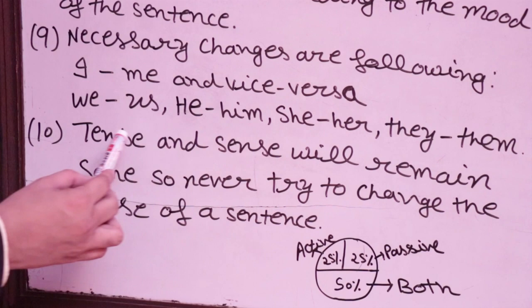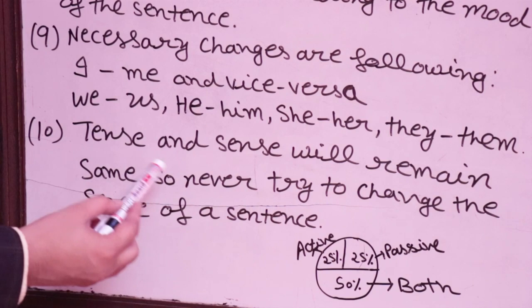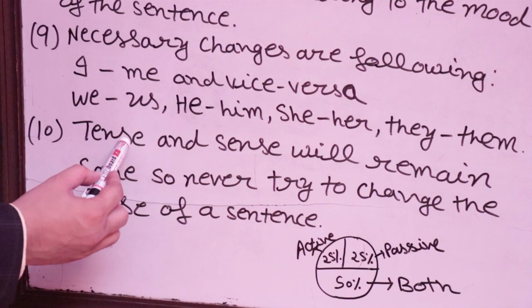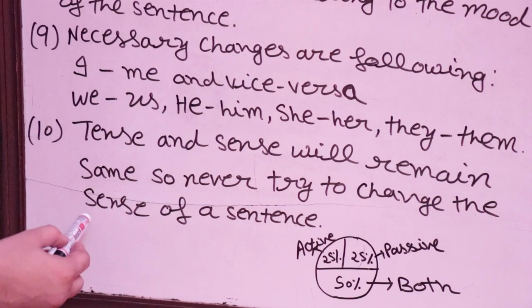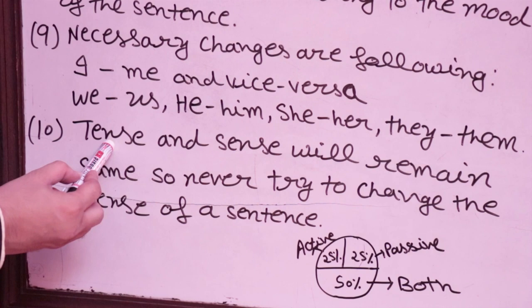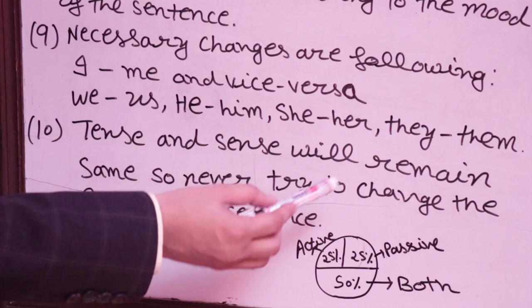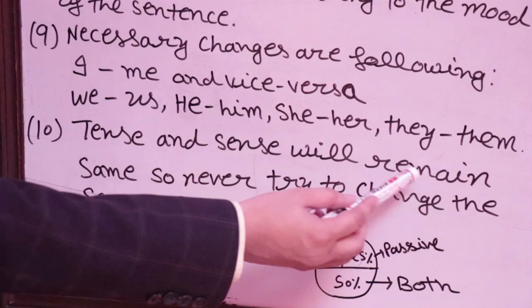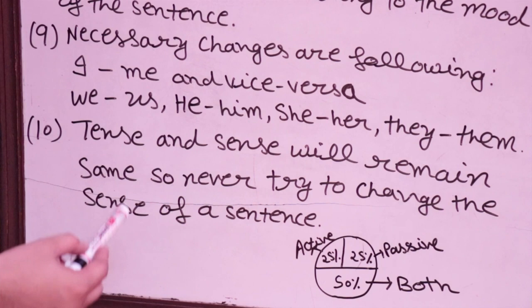Tenth rule: Tense and sense will remain the same — never try to change the sense of a sentence. For example, 'I eat food' is present indefinite. Its passive 'Food is eaten by me' keeps the same tense and sense. But 'I go to office' — if we say 'Office is gone by me,' that is completely wrong. The tense and sense change, so do not convert it. This rule is extra but most students make mistakes here.